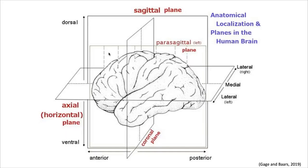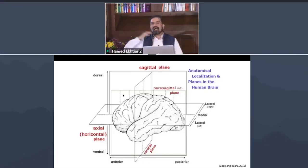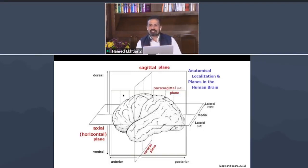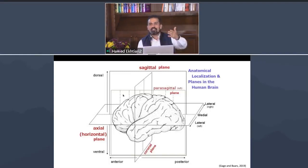When we talk about the brain, if you want to give people an idea about where a location is, you need to give them directions. To give directions in the brain, you need specific terminologies — exactly like when we use north, east, south on a map. There are specific directional terms for the brain: anterior means to the front, posterior means to the back.